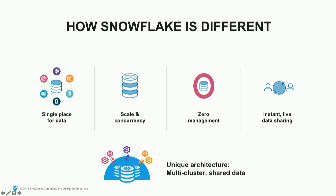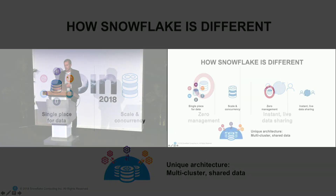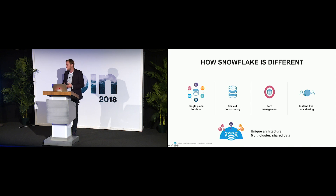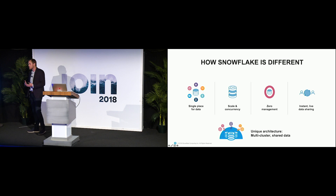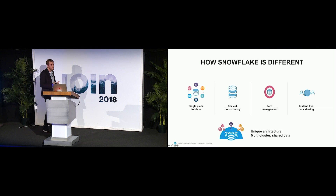The big thing with Snowflake is scale and concurrency. You're able to store all the data you want with elastic storage and query it with performance by bringing in virtual warehouses at scale. There's also zero management — compared to typical databases, a lot of this is automated, so you don't have to spend hours managing your data warehouse. And based on the unique architecture of Snowflake, where compute is separated from storage, it enables some pretty interesting things, including data sharing.